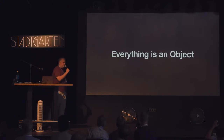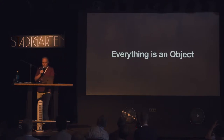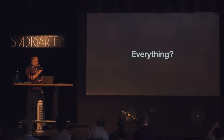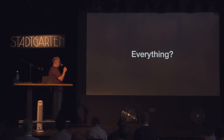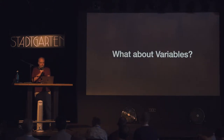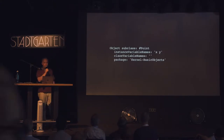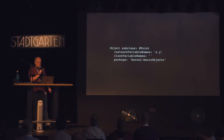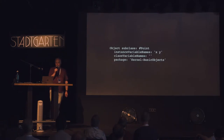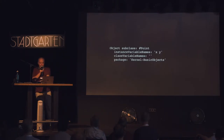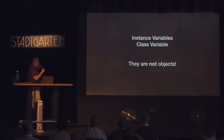In Smalltalk we are really proud that everything is an object. But at some point, after looking at all the objects that exist and playing around a lot, you find things that are actually not objects. One of those places is variables in the system. If we look at the class Point, which is used for everything in graphical systems, we know that we have two instance variables, x and y. But this x and y is not actually described by an object.